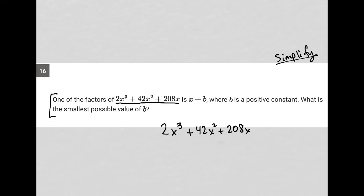So I'm going to simplify this. I'm going to start off by pulling out a GCF, my greatest common factor here looks like it's going to be 2x. So if I pulled out that 2x, I'd have left over x squared plus 21x plus 104.